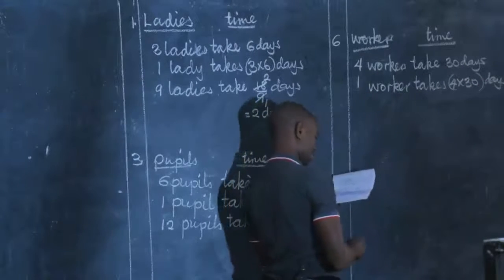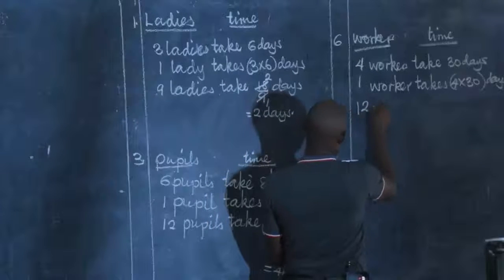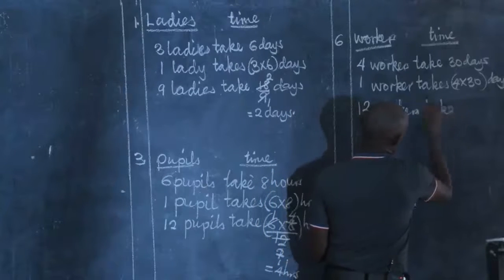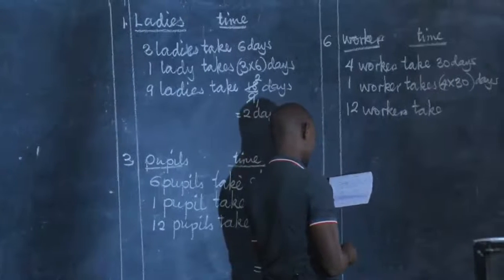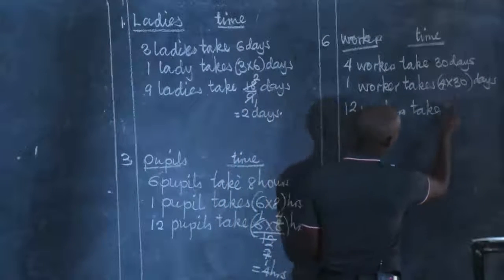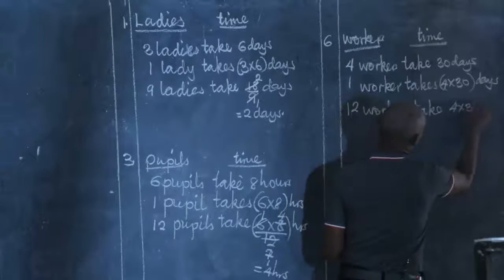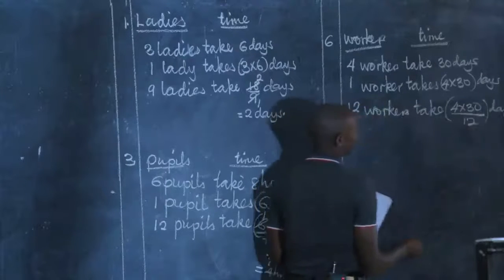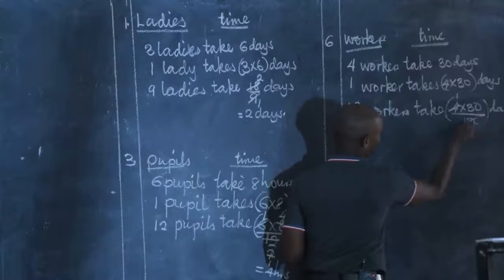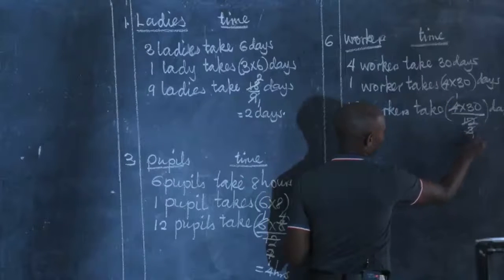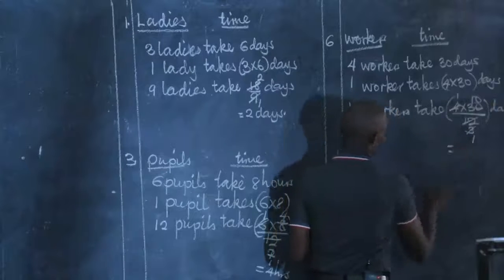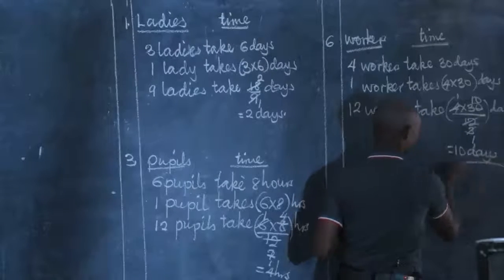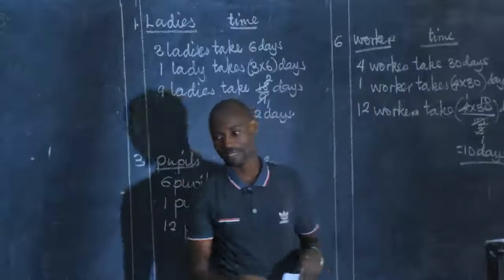What about if I increase to 12 workers? So 12 workers will take the product — four times 30 — and we divide by 12 days. Dividing: by four we get one, by four we get three, by three we get one, by three we get ten. So when there are 12 workers, it will be done in 10 days. I hope you also got that one.